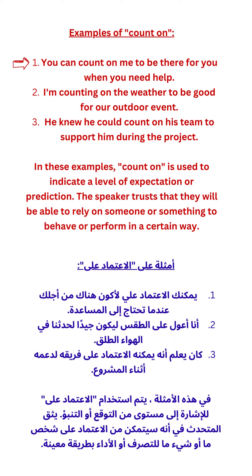I'm counting on the weather to be good for our outdoor event. He knew he could count on his team to support him during the project. In these examples, 'count on' is used to indicate a level of expectation or prediction — the speaker trusts that they will be able to rely on someone or something to behave or perform in a certain way.